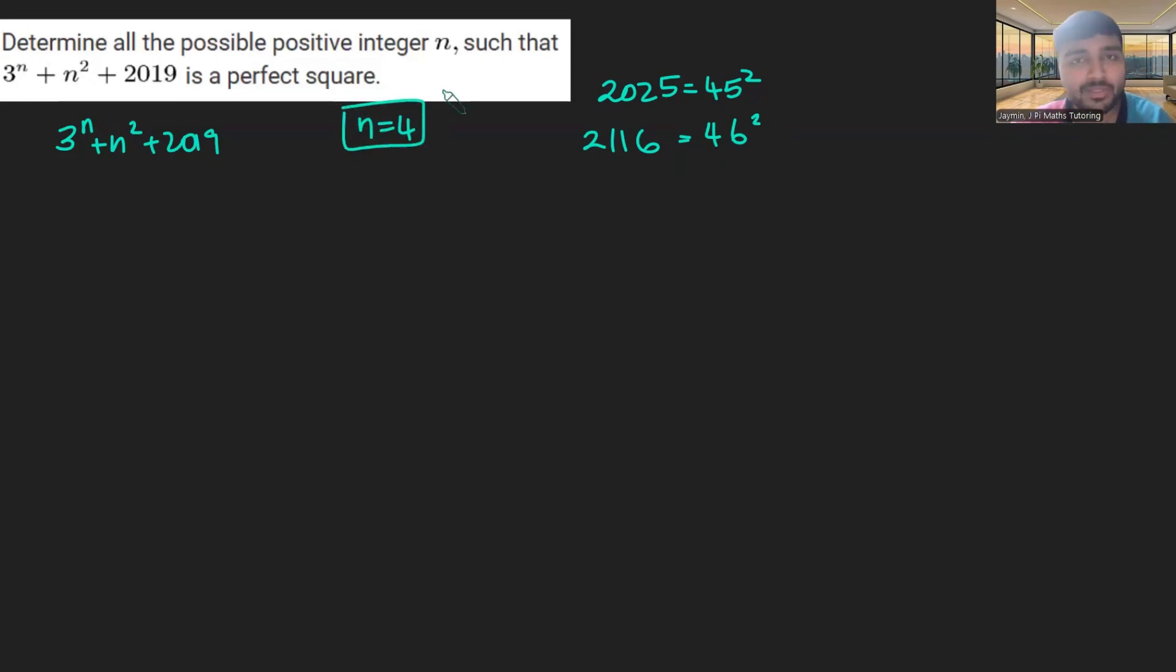Cool. And we could keep trying if we wanted to and playing around with this. But of course, there's got to be a point where we stop, because if we stop at 100, let's say, we could keep going. But we want to know, are there any more? And it turns out n is 4 is the only solution. And I'll prove that to you here.